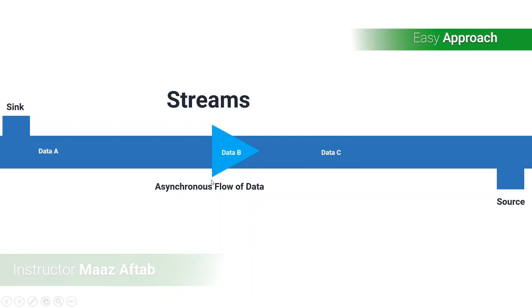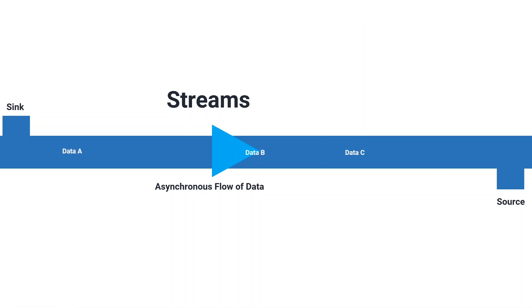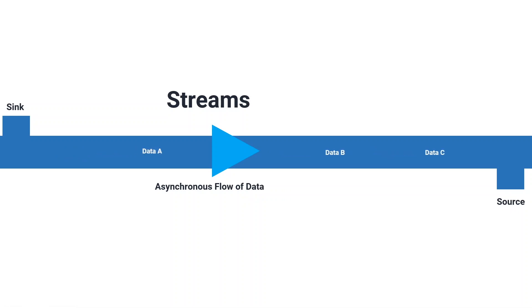A stream is nothing but a continuous flow of asynchronous data — the data keeps flowing through the stream during its lifecycle. There are two ends associated with a stream: the first one is called sink and the second is called source. Sink is the point from where we can add something to the stream, and source is the point from where we can listen and get the data coming from the stream.